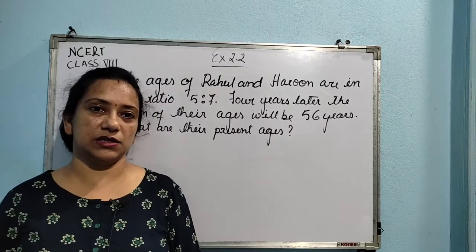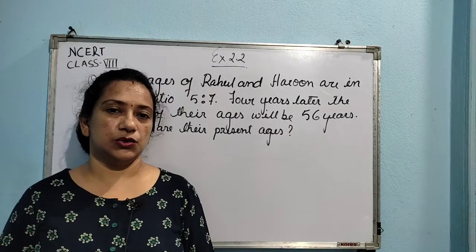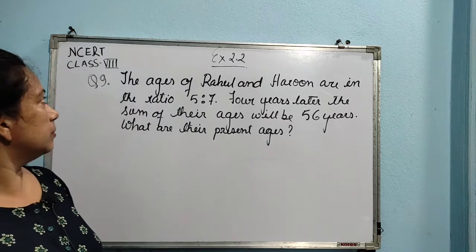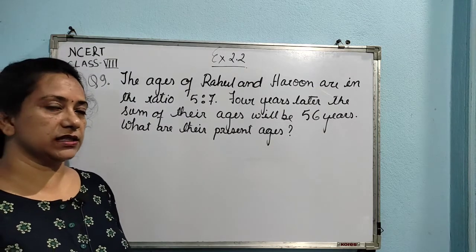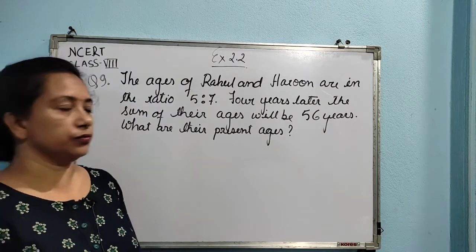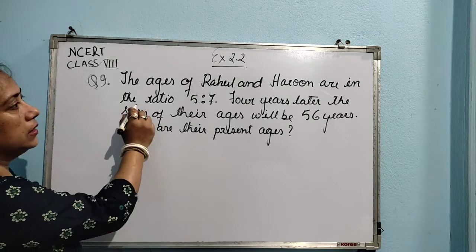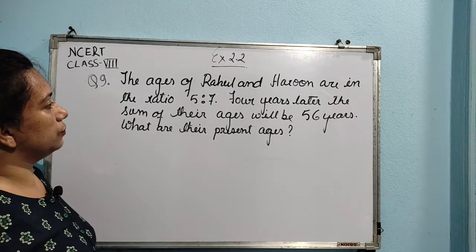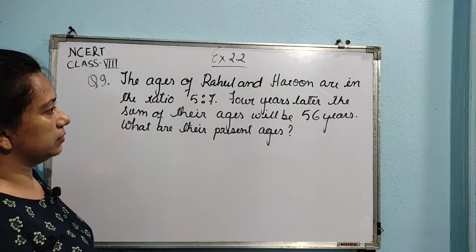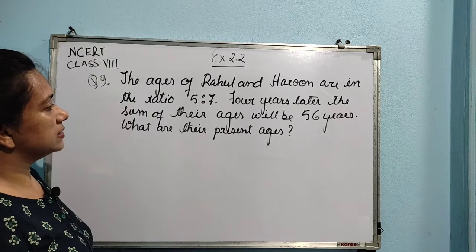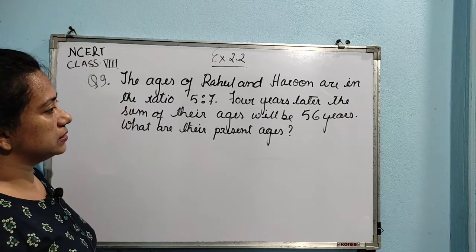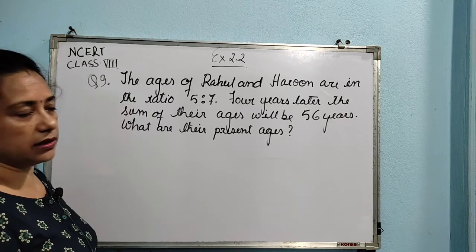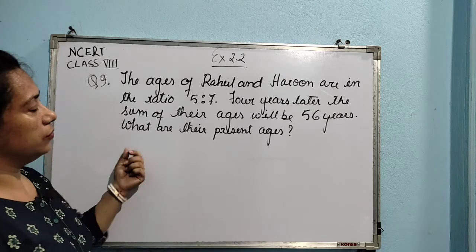Hello dear students. Today in this video I will be discussing question number 9 and 11 of exercise 2.2. Here is question 9: the ages of Rahul and Haroon are in the ratio 5 is to 7. Four years later the sum of their ages will be 56 years. What are their present ages?